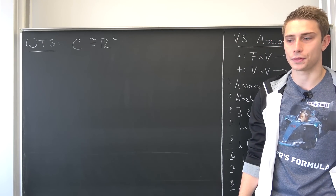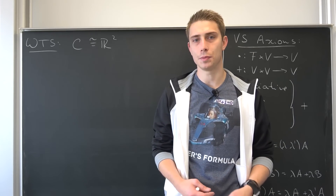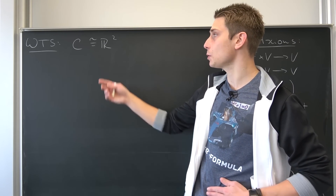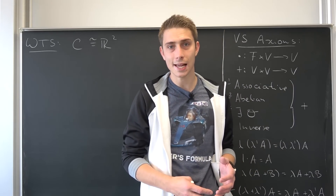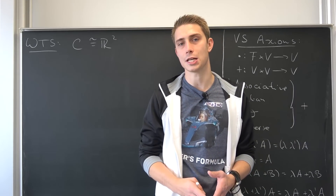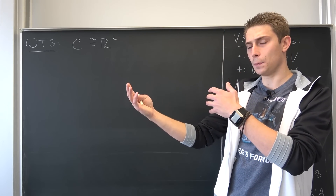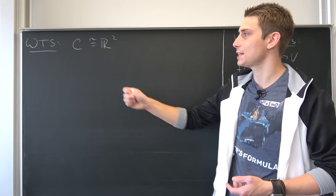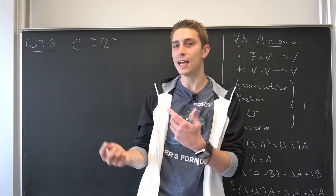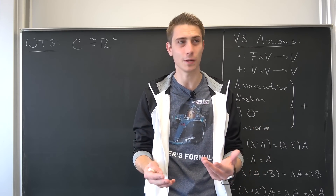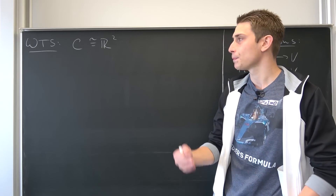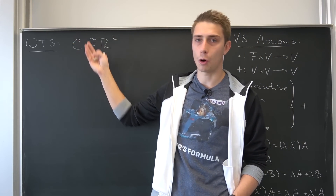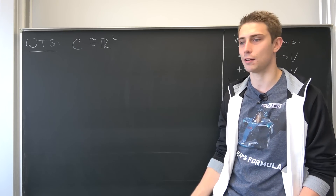Now, C being isomorphic to R² means the following. If we have a vector space isomorphism between two sets, we can take an element in C, give it a new name — turn it into a vector — and this new representation is equivalent to our old one. Interpreting matrices geometrically is kind of weird and doesn't make much sense. But if we show there's a vector space isomorphism, we can translate our matrix into a vector, and vectors are really easy to handle. We can even use Pythagoras on vectors, and many properties of complex numbers will make so much sense geometrically.